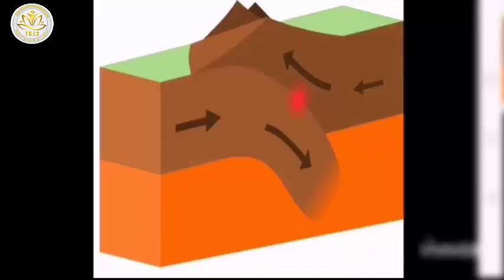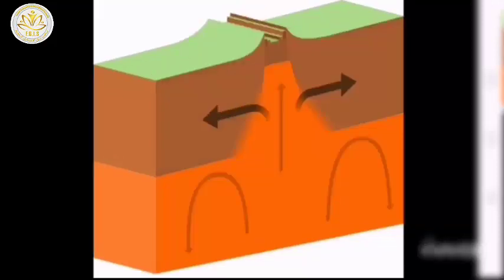Convergent boundary: this happens when two plates collide. They represent mountains. Divergent boundary: this happens when the plates move away from each other, and they represent magma.